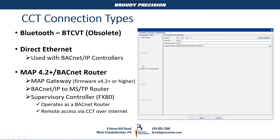When you choose the BACnet router or MAP gateway option, it'll work with MAP gateways at version 4.2 or newer, or BACnet routers — which could be a standard BACnet IP to MSTP router, or a supervisory controller, a JACE. The JACE basically becomes a BACnet router, and it would allow you to access the system remotely. If you have remote access to your JACE, you just need to add the BACnet port as a port forward to get down into it.